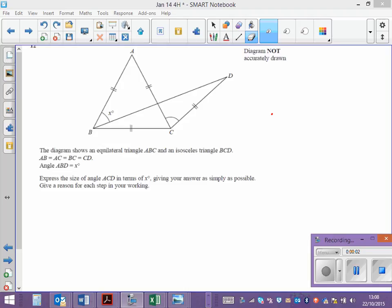I need to explain every single step of my working here. First of all, just to get our heads around the question, triangle ABC is equilateral, which means that all three sides are the same length and all three angles are the same.